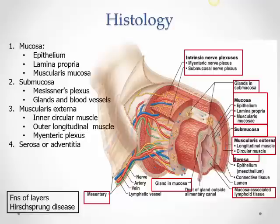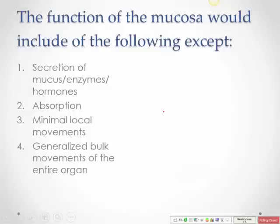Hunger pains occur when the whole muscularis externa contracts because gastric juices are secreted roughly every three hours and the stomach expects it. The stomach is trying to move contents forward but there is nothing inside. Too much air in the stomach can cause colic.